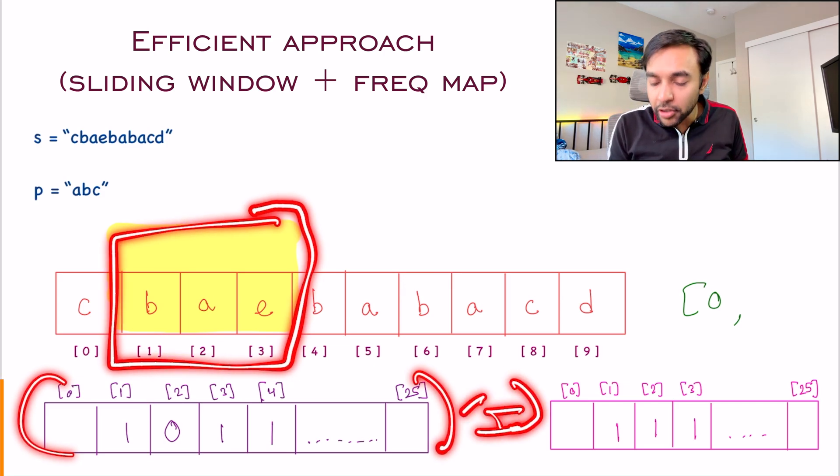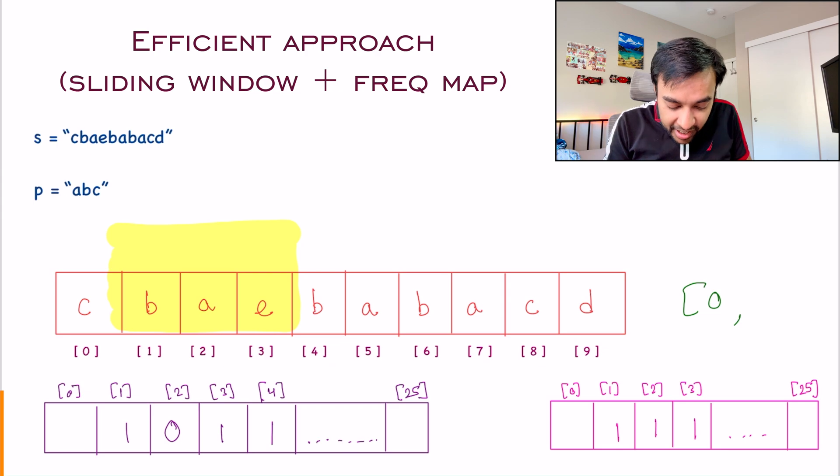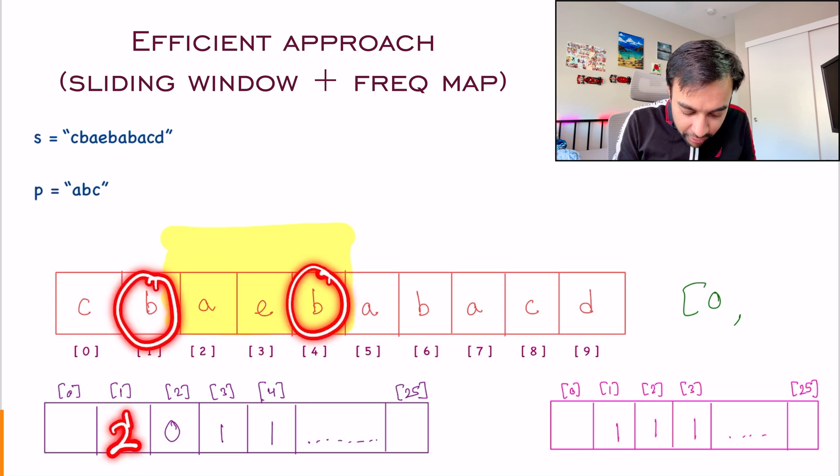Once again, you compare both of these arrays. If they were same, you can add this index. Otherwise, no. Currently, you don't have to add it. So now what you can do is you can move ahead. And now what happened? B got added. So this will become two. And one B got removed. So this will once again become one.